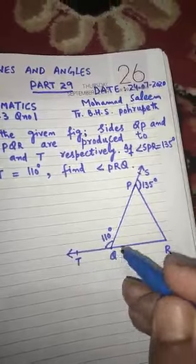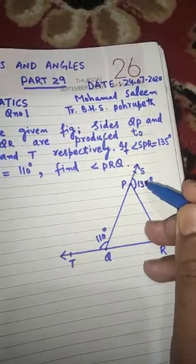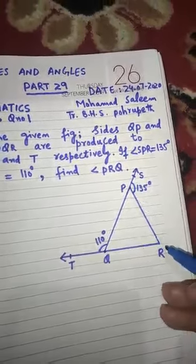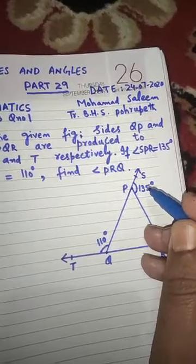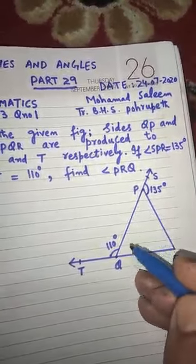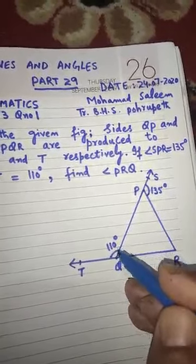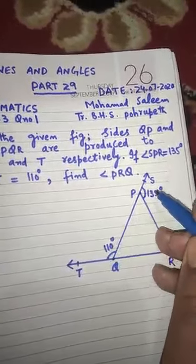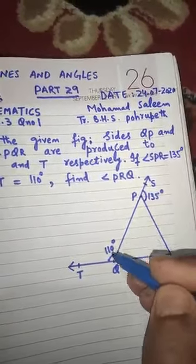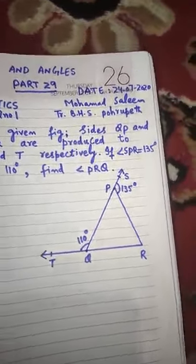Due to this extension, two exterior angles are formed. One is angle SPR, which is 135 degrees — that is given. Another exterior angle is angle PQT, which is 110 degrees — that is also given. So two sides have been produced and two exterior angles are formed, and both are given.